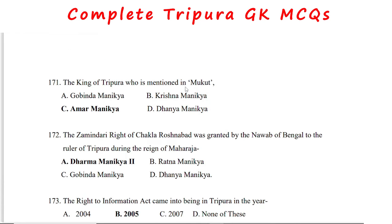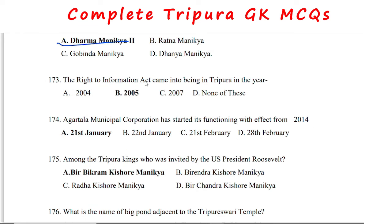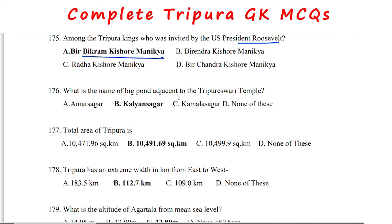The king of Tripura mentioned in Mukurt was Maharaja Amarmanika. The zamindari right of Chakla Roshanabad was granted by the Nawab of Bengal to the ruler of Tripura during the reign of Maharaja Dharmamanika II. The RTI Act came into being in Tripura in 2005. Agartala Municipal Corporation started functioning from 21st January 2014. Among Tripura kings, Maharaja Virbikram Kishor Manika was invited by US President Roosevelt. The big pond adjacent to the Tripurasari temple is Kallansagar.